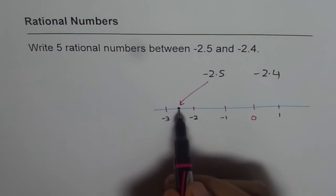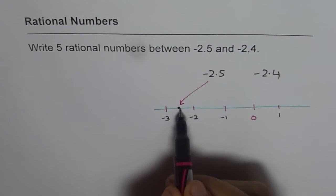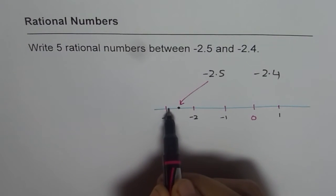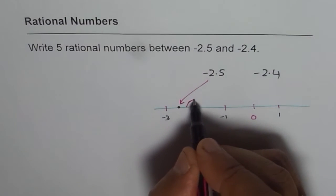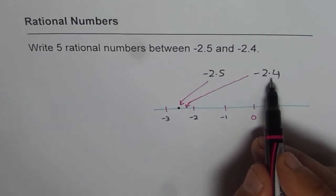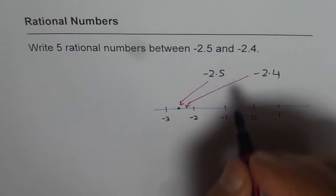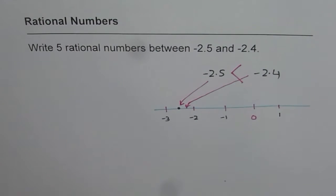As you see, if you move towards left, it becomes minus 2, minus 2.1, 2.2, 2.3, 2.4, 2.5, and so on up to minus 3. So, of course, minus 2.4 will be somewhere there. So, minus 2.4 is greater than minus 2.5.